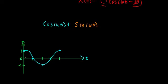Now let's plot the sine wave. The sine wave starts off at zero, goes up to one, then back down to zero, then down to negative one, and back up to zero. So now what we're going to do is add the sine and the cosine together graphically, point by point.